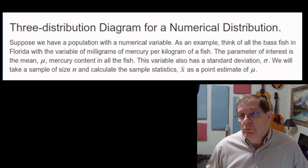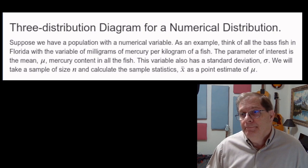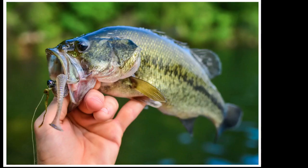Suppose we have a population with a numerical variable. As an example, suppose our population is all the bass fish in Florida, and the variable that we're looking at is the milligrams of mercury per kilogram in each of the fish.